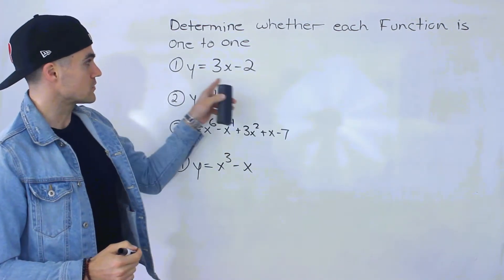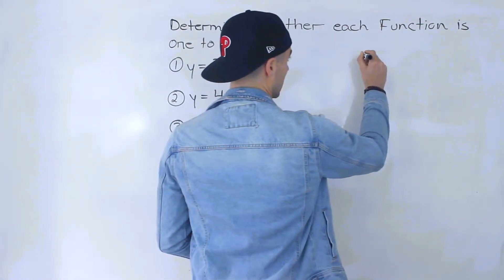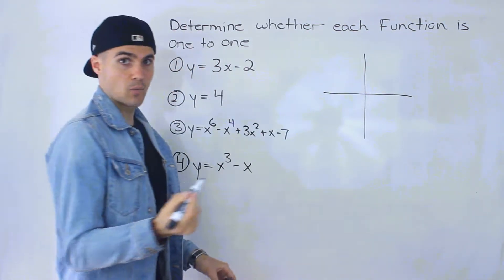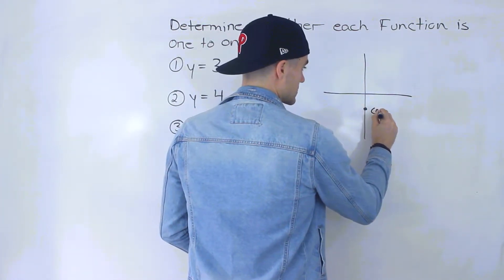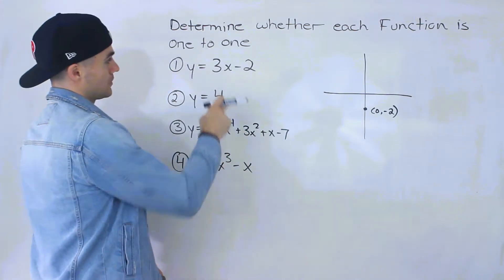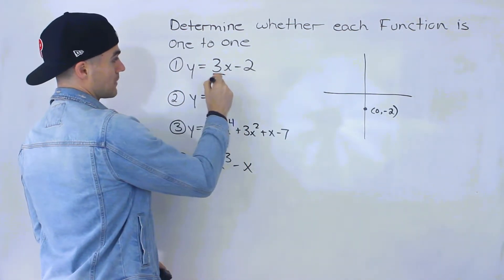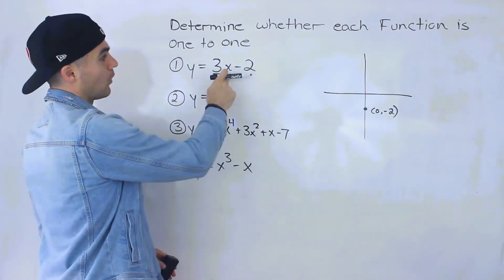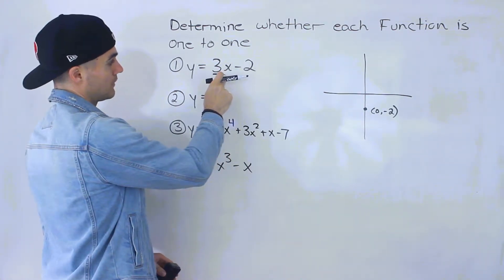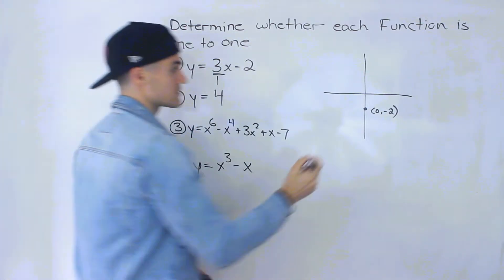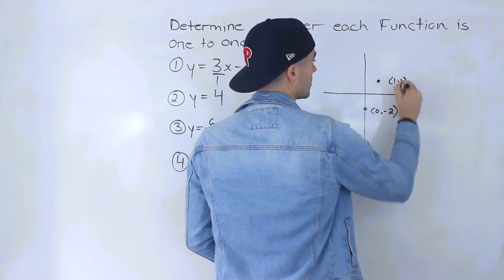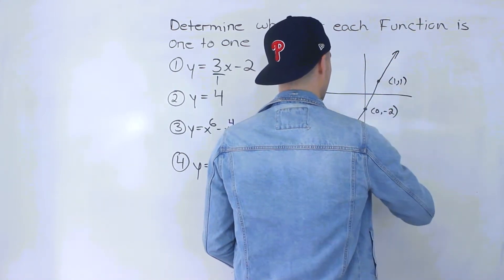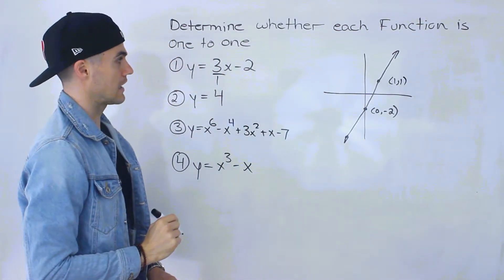Starting with number one, we have y equals 3x minus 2. Notice how this is a line in y equals mx plus b form. The minus 2 is the y-intercept, so that's the point (0, -2). The slope is 3, or 3 over 1, so we rise by 3 and run by 1. Plugging in x equals 1 gives us y equals 3 times 1 minus 2, which is 1. So (1, 1) is also a point on this line, and we can connect the two points.